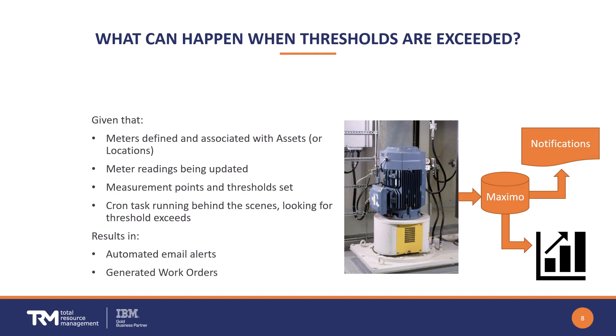Let's stop here a moment to ponder what we've built. We've defined meters and attached them to our asset or location records in Maximo. The meter readings are being updated either manually by our work teams or automatically by way of technical interfaces. Maximo now knows the limits — the thresholds — for each measurement point and will generate warning emails or work orders if those thresholds are exceeded.